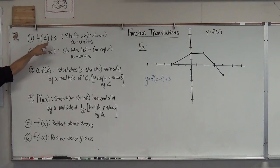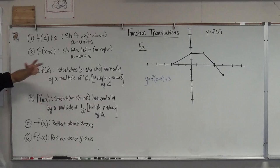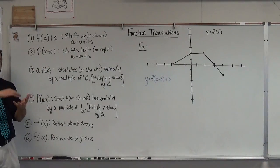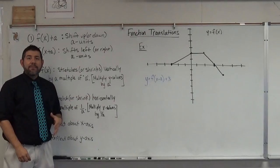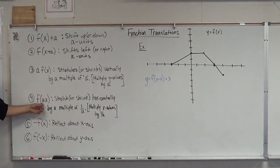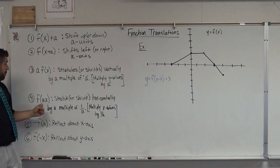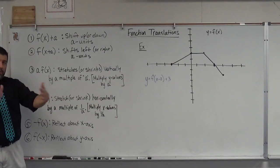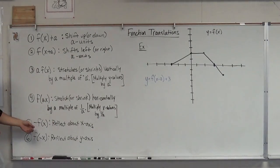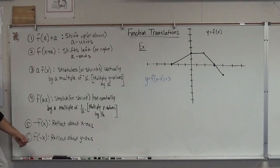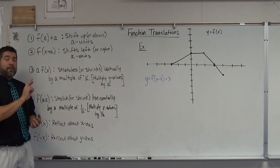When we add a number outside the parentheses, we're going to shift it up or down a units. If we add it inside or subtract, we're going to shift it left or right a units. If we're multiplying outside, that stretches or shrinks it vertically by a multiple of a — we're going to multiply our y values by a. If we multiply inside by a number, we're going to stretch or shrink it horizontally, and that's going to be by a multiple of 1 over a, so we multiply x values by 1 over a. If we have a negative outside our f of x, we're going to reflect it about our x-axis. If we have a negative inside our parentheses, we're going to reflect it about the y-axis.